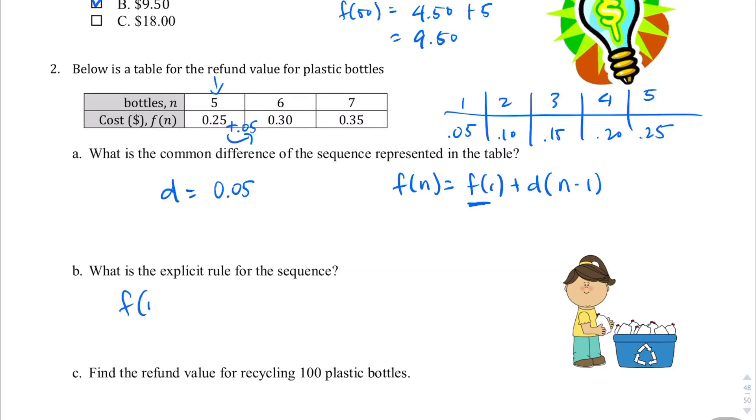Let's write the explicit rule. It's going to be f(n) equals the first term, which is 0.05, plus the common difference, which is 0.05 times n minus 1. And then let's go ahead and simplify that. We're going to end up with 0.05 plus 0.05n minus 0.05. And look at that. So this and this are going to subtract. So we end up with a very simplified equation for f(n). We're going to end up with f(n) is equal to 0.05n. So that is our explicit rule.